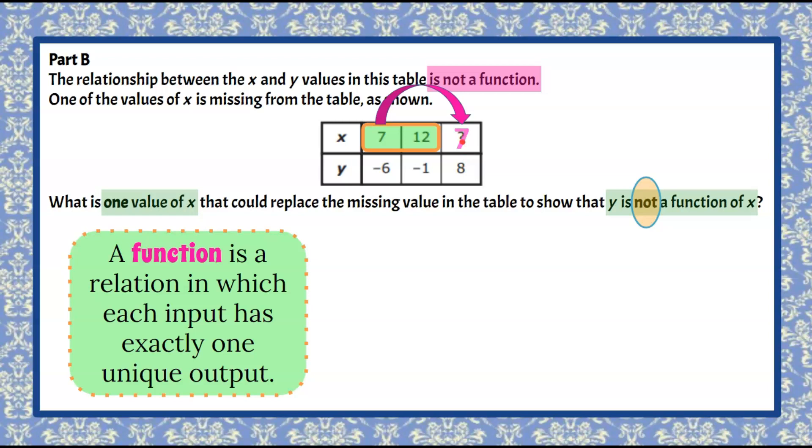I could also take 7 out and replace it with 12. If I replaced this unknown value with 12, now 12 has two different outputs. It's not one unique. We have 12 with an output of negative 1 and 12 with an output of 8. So therefore it is not a function seeing as the input 12 has two different outputs.